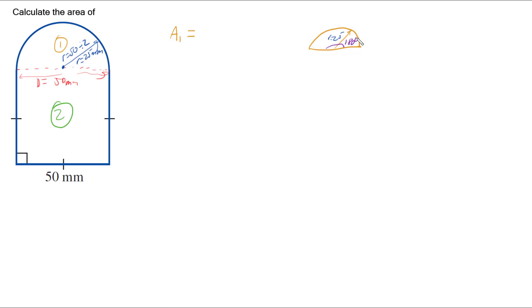So if I go to my rule where I've got theta on 360 degrees, we've got the fraction of the circle multiplied by the area of a full circle, pi r squared.